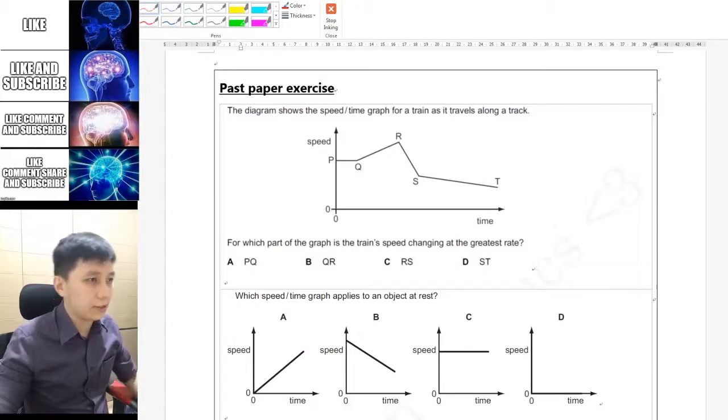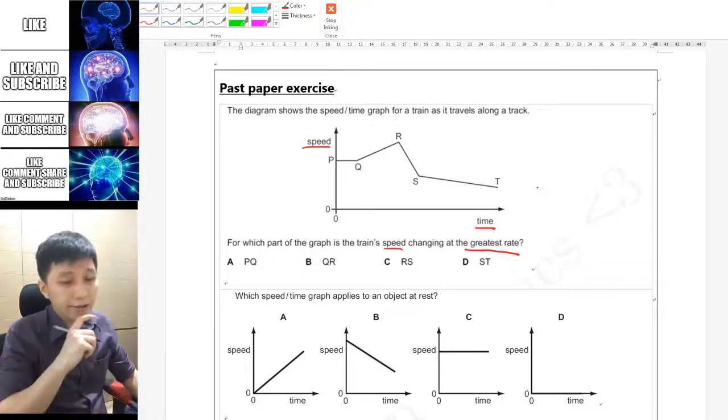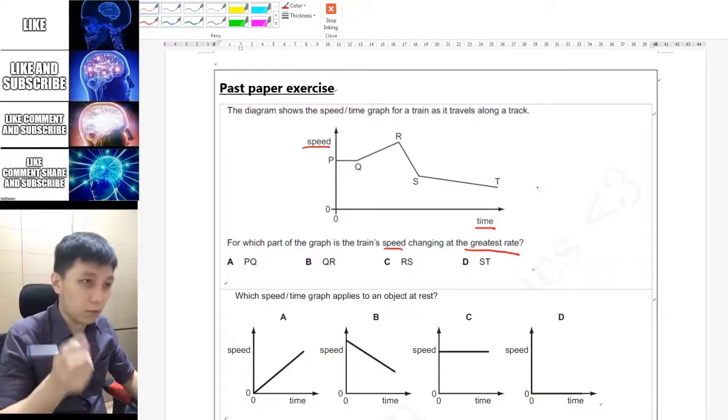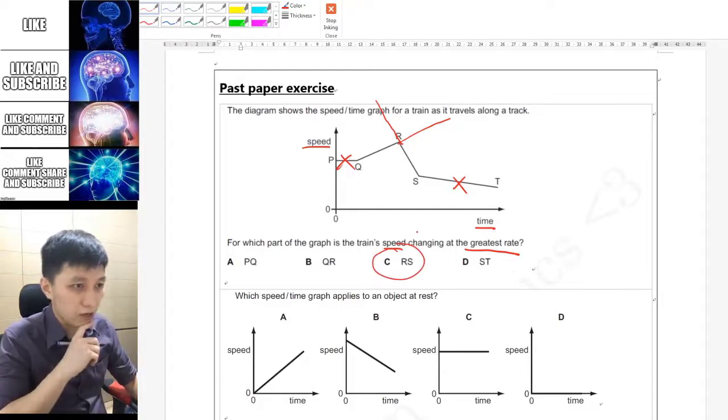Next, these are the past paper exercises. It said which part of the graph is changing at the greatest rate for the speed. This is a speed-time graph, so the slope will be the most important. I think definitely not these two. It's either this one or this one. I'm pretty sure that this is steeper, so RS is the one that the speed is changing at the greatest rate.